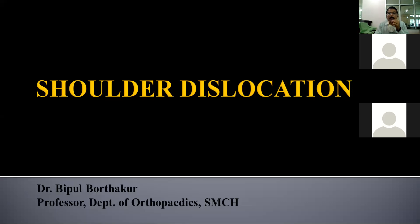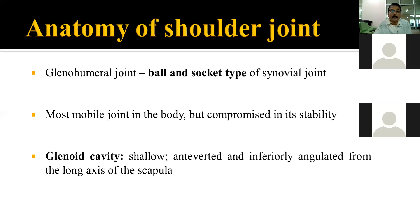Today we will be discussing the anatomy of the shoulder joint, which is very important for all of us. Shoulder joint is a ball and socket type of synovial joint. It is a multi-axial joint in the sense that it has quite a range of movement in many axes.